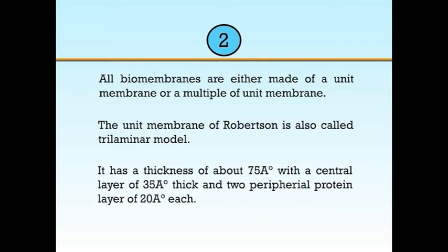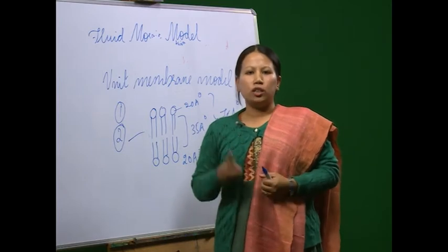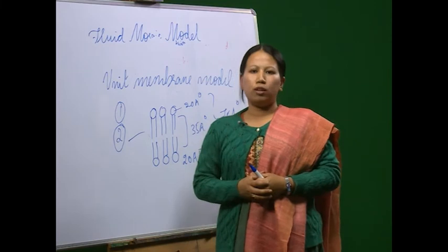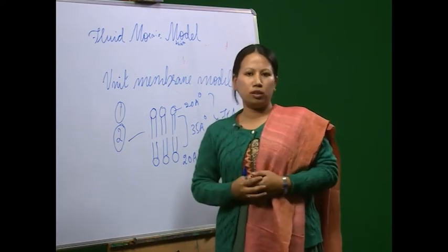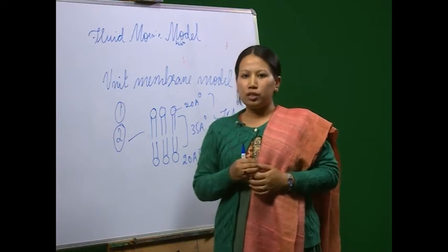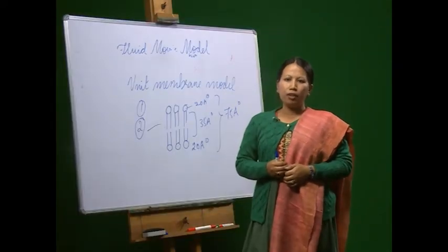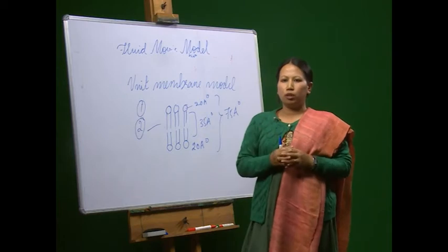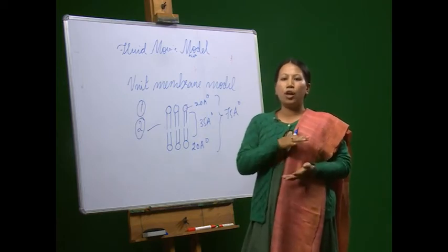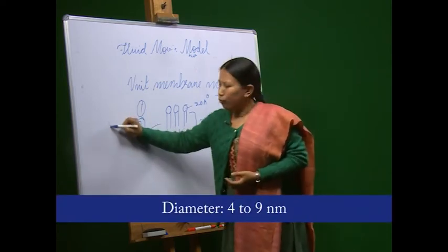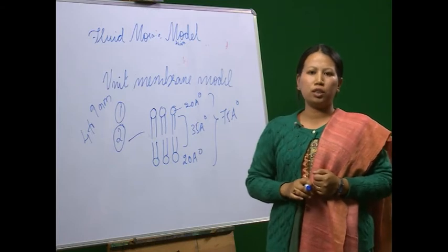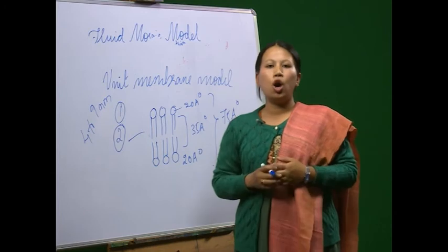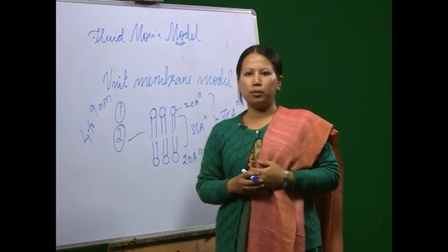Two, all biomembranes are either made of a unit membrane or a multiple of unit membrane. The unit membrane of Robertson is called the trilaminar model. It has a thickness of about 75 angstroms with a central layer of 35 angstroms thick and two peripheral protein layers of 20 angstroms each. According to Robertson, each membrane containing more than three layers or thicker than 75 angstroms must be a multiple unit membrane. In the unit membrane model, the protein layers are asymmetrical — on the outer surface it is mucoprotein while on the inner surface it is non-mucoprotein. Later, other investigators proposed a globular or subunit model in which membranes were viewed as consisting of recurring lipoprotein subunits of diameter 4 to 9 nanometers, resembling the subunit structure of some oligomeric proteins. However, globular models failed to account satisfactorily for many properties of membrane.